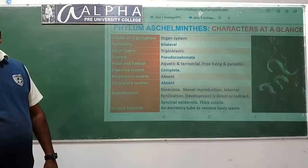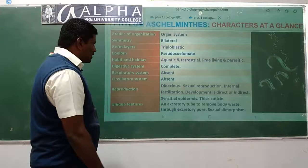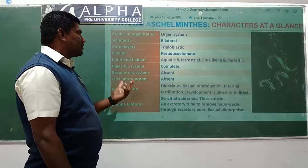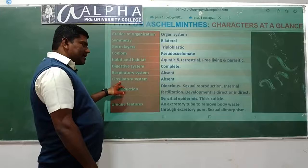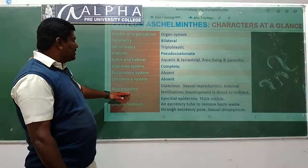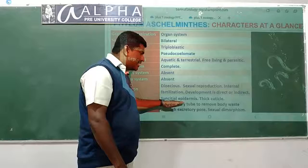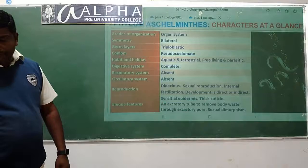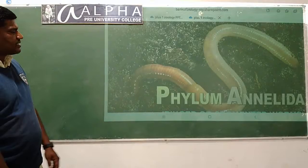Examples for phylum Aschelminthes: Ascaris lumbricoides, hookworm. Characteristics at a glance: organ system level organization, bilaterally symmetrical, triploblastic, pseudocoelomate, both aquatic and terrestrial, free living or parasites. Complete digestive system, no respiratory or circulatory system. Sexual reproduction, internal fertilization, both direct and indirect development. Unique features: multinucleated epidermal cells with thick cuticle, excretory tube, clear sexual dimorphism.